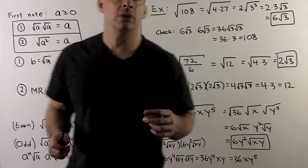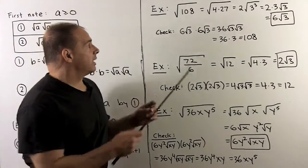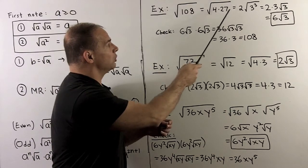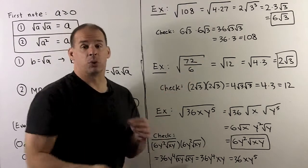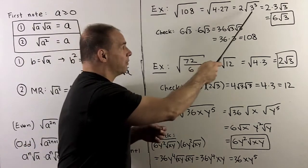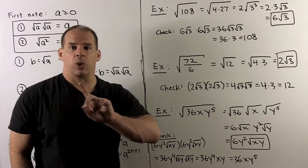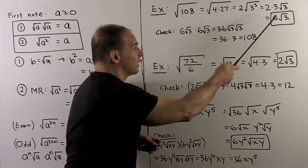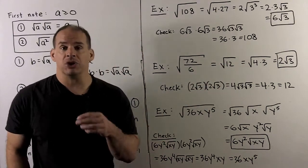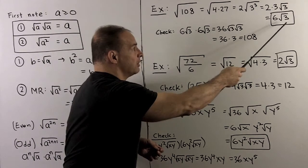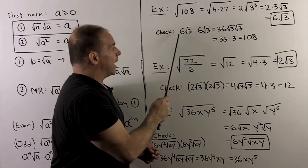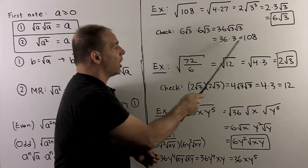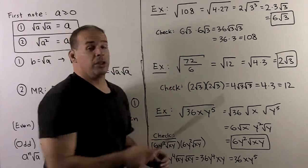For another example: square root of 108. Factoring into primes gives 2 squared times 3 cubed. Square root of 4 equals 2, so we pull that out. For 3 cubed — odd exponent — we remove a square root of 3 to the side and cut the remaining exponent in half, giving just 3. So we get 6 square root of 3. To check: 6 square root of 3 times 6 square root of 3 gives 36 times 3, which is 108. That agrees with what's under the radical.